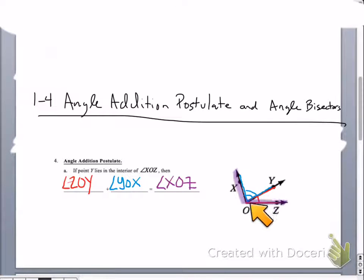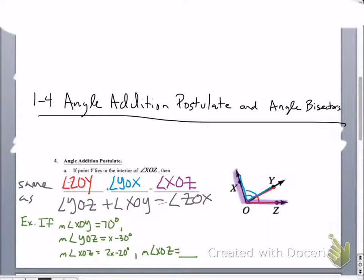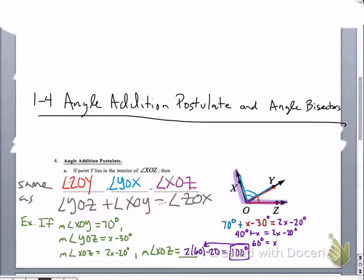As long as they share a common side and no other points, we can do that. So, we can change these names around and stuff like that. Here's an example, then. If X, O, Y, is equal to 70, and Y, O, Z, is equal to X minus 30, and angle X, O, Z, is equal to X minus 20, what's the measure of angle X, O, Z? We need to use these expressions to write an equation so that we can solve for X. We can plug these expressions into this guy. And we'll have this equation, 70, X, O, Y, plus X minus 30, which is Y, O, Z, equals the measure of angle X, O, Z, to X minus 20, and then go solve. I hope you see the relationship, then, between this and the segment addition postulate. It's the same concept. Just apply it to angles instead.